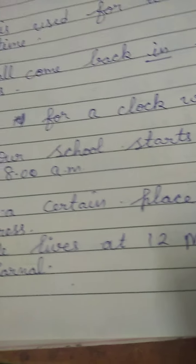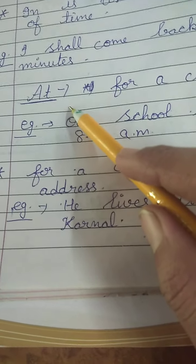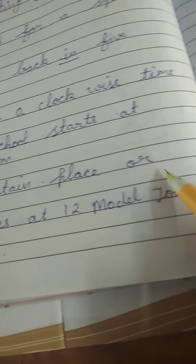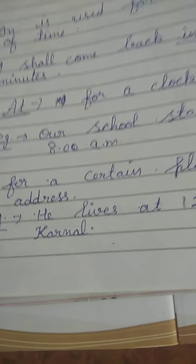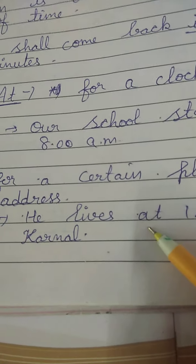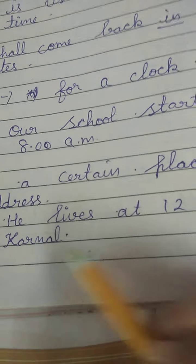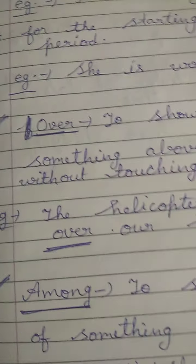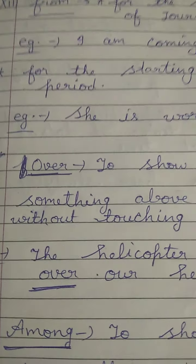'At' is also used for a certain place or address. For example: he lives at 12 Model Town — if you want to specify a certain address, we use 'at'. Particular address agar hame define karna hai, then we will use 'at'.